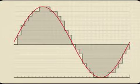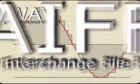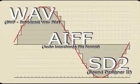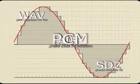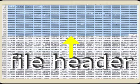When considering which file format to use, know that 99 plus percent of the data in a WAV, AIFF, or Sound Designer 2 file with the same sample rate and bit depth is identical. They're all uncompressed PCM, meaning pulse code modulation files. The difference is in the file header, which is a minuscule part of the entire file.